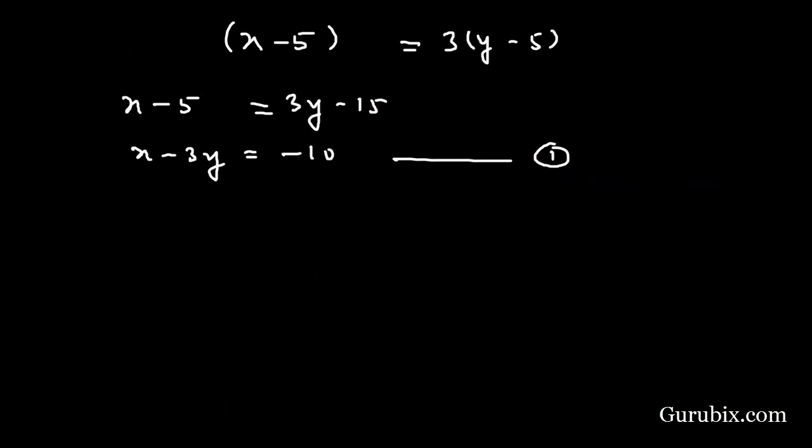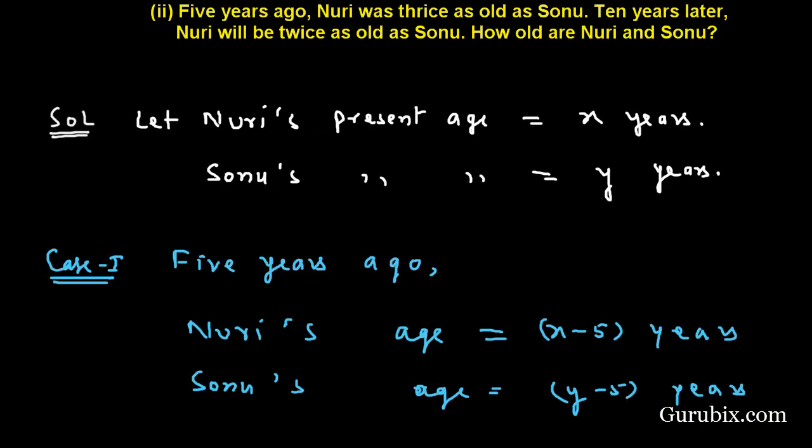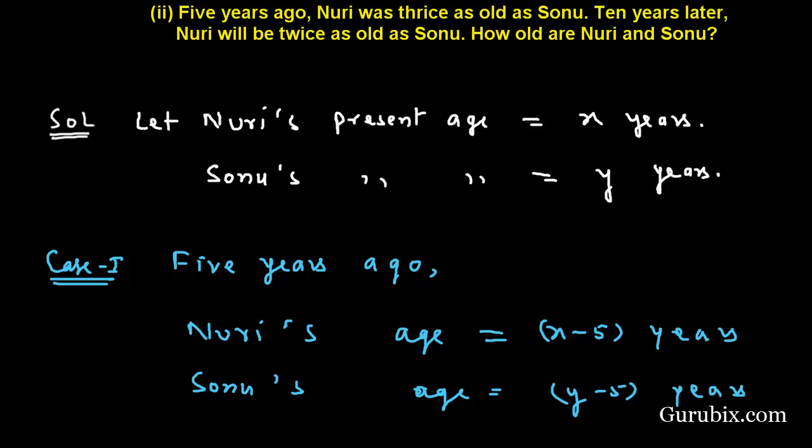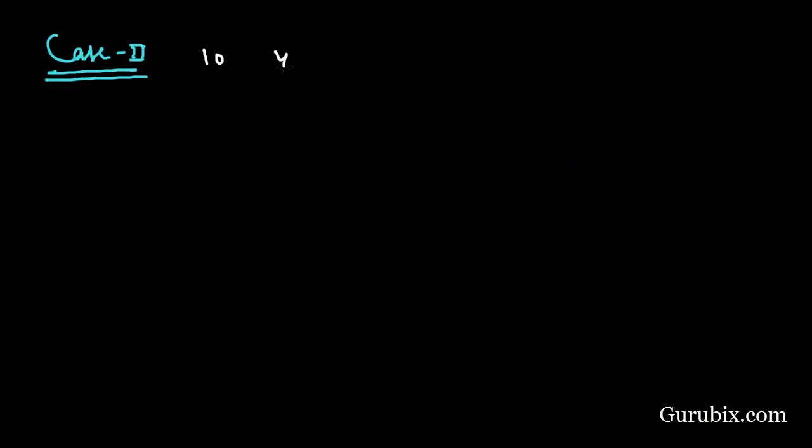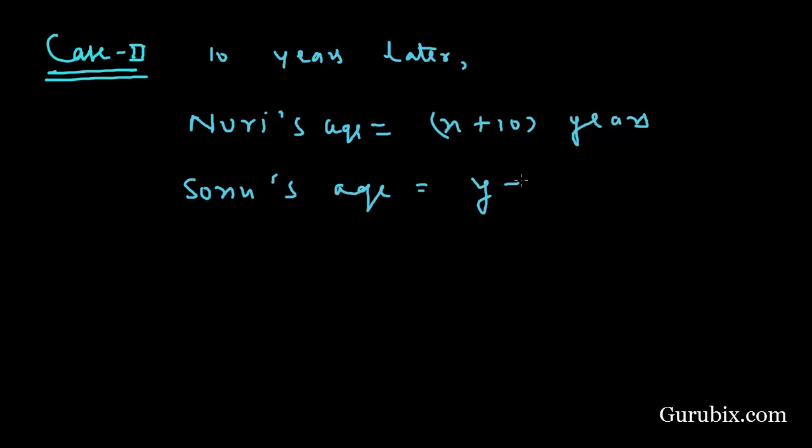Now we shall discuss case second. In case second we have to find the age of Nuri and Sonu 10 years later. Nuri's age will be x plus 10 years. Sonu's age will be y plus 10 years.